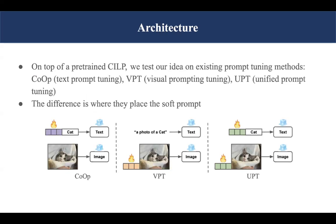Our architecture follows existing prompt tuning methods. The method adds a trainable parameter in front of the text embedding, image embedding, or both, while keeping the pre-trained CLIP fixed.